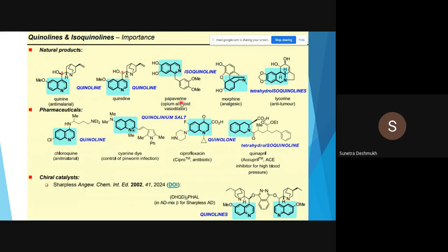Isoquinoline-containing papaverine, opium alkaloids. In morphine also, you can find the isoquinoline. Then tetrahydroisoquinoline you can find in Lycorea, an antitubercular drug.